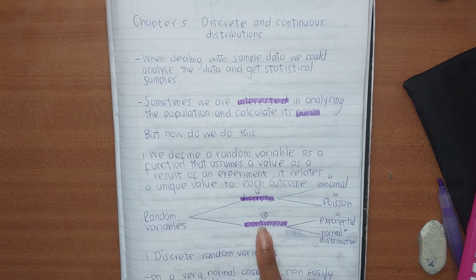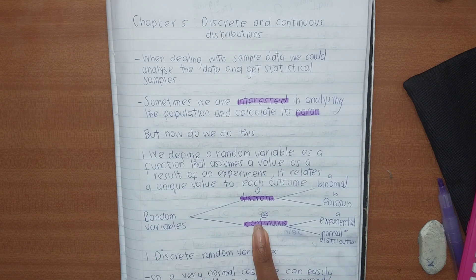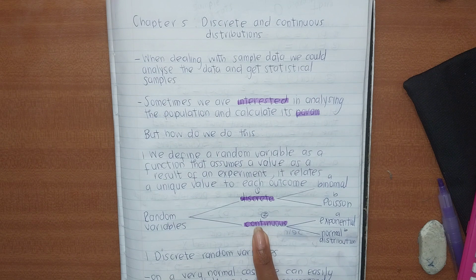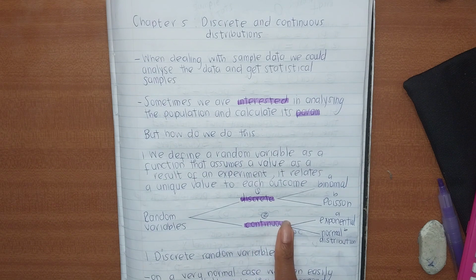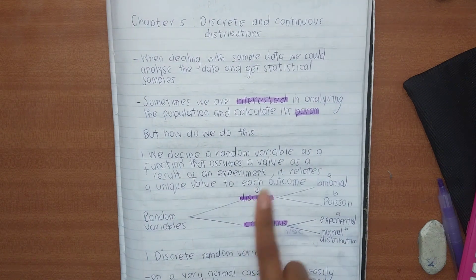With continuous, we are not counting but rather measuring. We're talking about things like time — you can have one and a half hours, three point seven hours, one point five centimetres, or twelve point five kilometres. With the continuous variable, think of continuous as having decimals in your numbers.